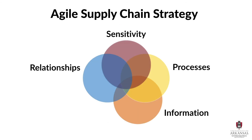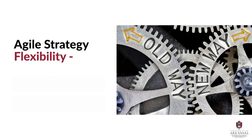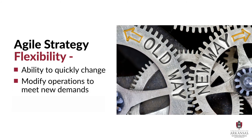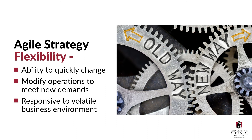And finally, flexibility is the essence of agile supply chain strategy. People and processes both need to quickly change and respond to evolving supply and demand conditions. People need to be open to constant change and have an attitude that embraces an uncertain environment. Likewise, processes need to be designed in a way that enables quick modification to meet new demands.